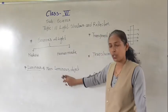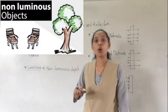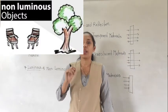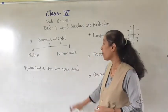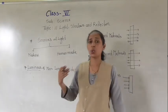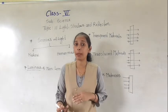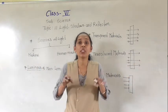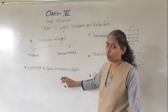Now, what is a non-luminous object? An object which does not give out its own light is called a non-luminous object. For example, animals, human beings, a board, paint, pencil, paper, or a fan — so many things which don't have their own light are called non-luminous objects.